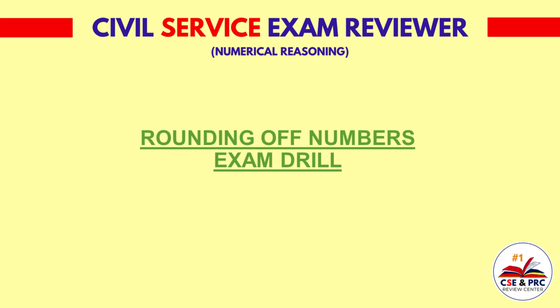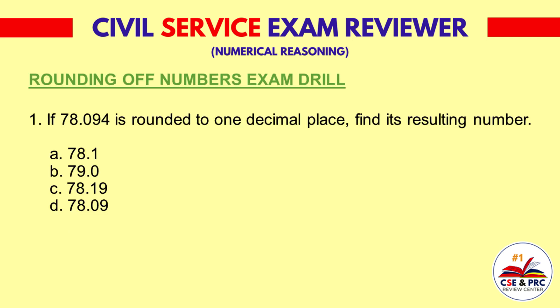Now let's have an exam drill. Question 1: If 78.094 is rounded to one decimal place, find its resulting number. A. 78.1, B. 79.0, C. 78.19, D. 78.09. The answer is A: 78.1.